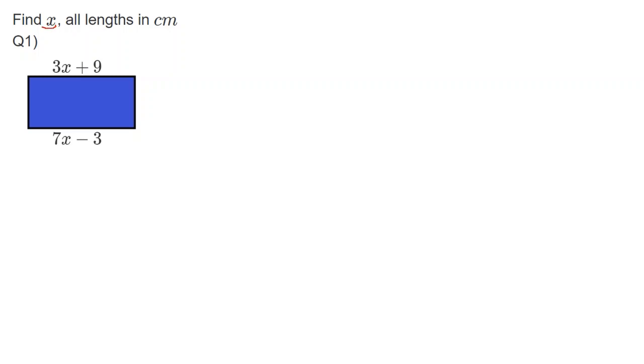So here we are told to find x, to find the value of x and all the lengths are in centimetres. So all we need to do here is think, what do we know is the same? I know that this side here is the same as this side here because it is a rectangle. So I know that 7x minus 3 is the same as 3x plus 9. In maths, we've got a symbol that does that for us, that symbol is our equal sign. That means is the same as.